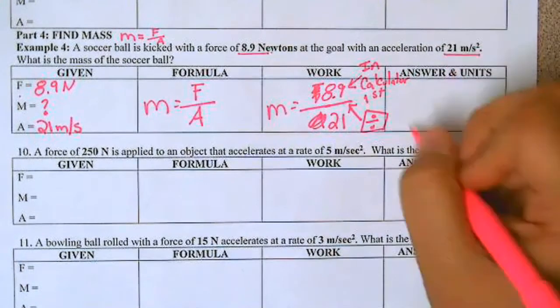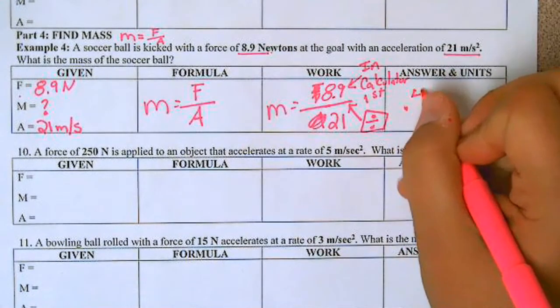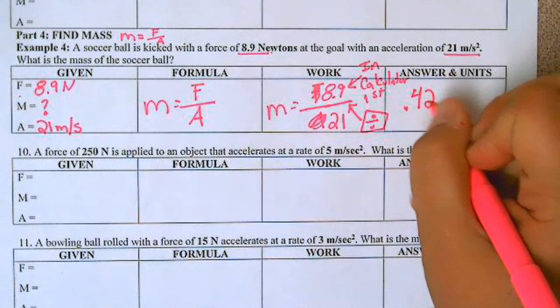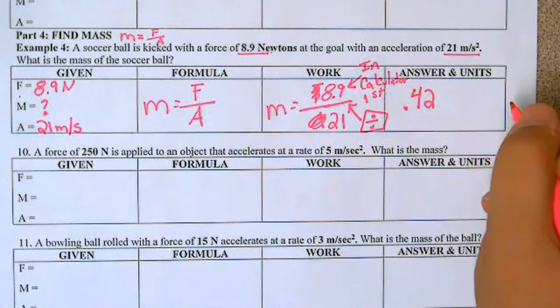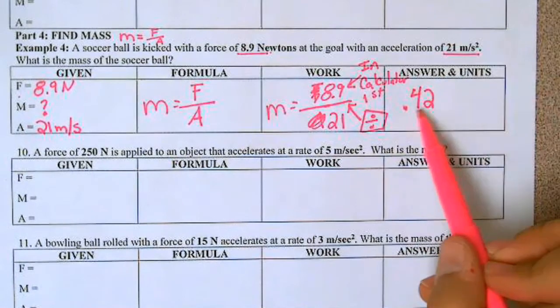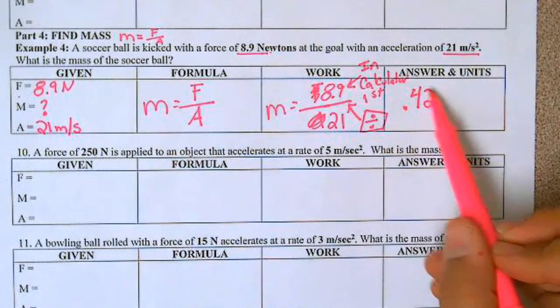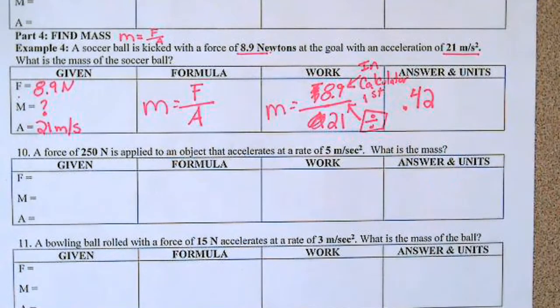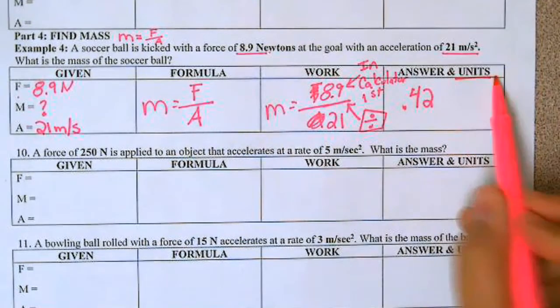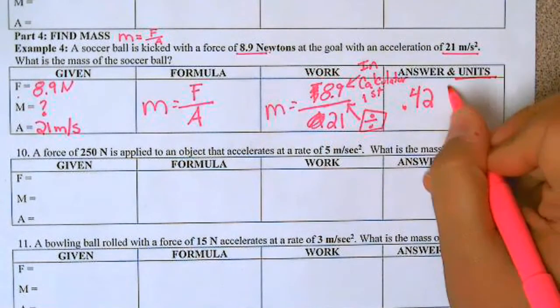So for this, I get 4.4238... So I'm going to round it to two significant figures. Because the next number is a 3, a 3 is smaller than 5, so I'm going to round down and keep it at 4.2. The units for mass is kilograms.